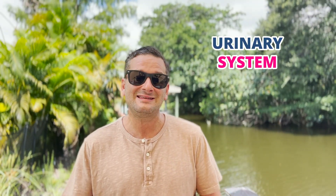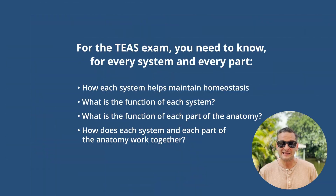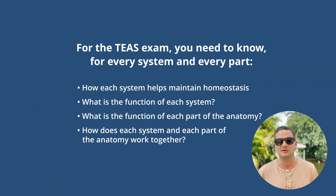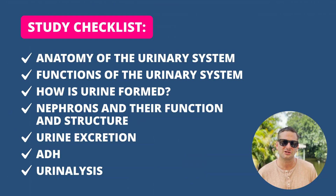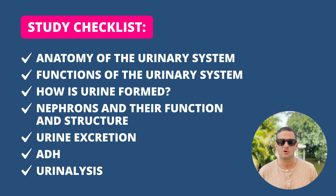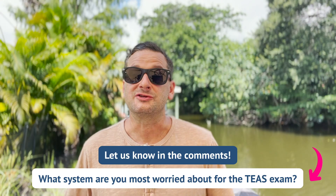The urinary system is the final system to study before moving on to the support and movement systems and the integration and control systems. It's important to know more than just the anatomy — you really need to know these systems in depth. That means understanding the urinary system's functions, including excretion, absorption, filtration, and how the various parts work together within it.